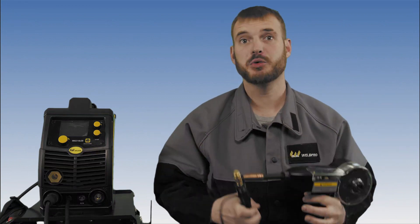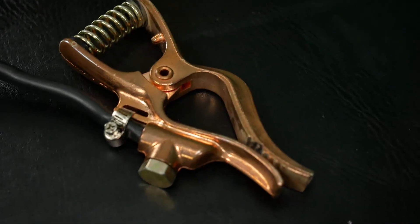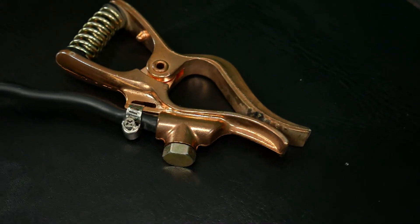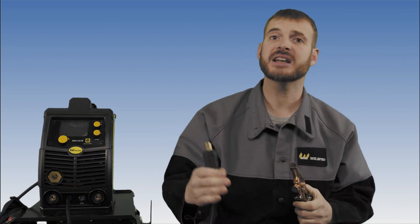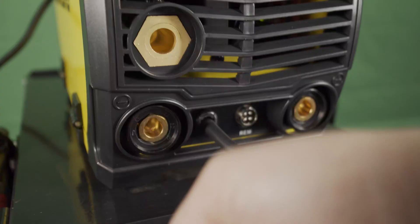To get started setting up the spool gun, first locate your ground clamp. When it comes to running aluminum spool gun, we run on DC electrode positive polarity. Therefore, we want to connect our ground clamp to the negative terminal on the front of the MiG-210 LCD.